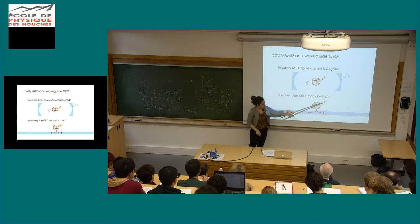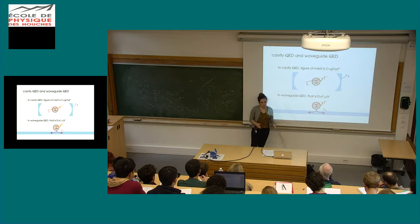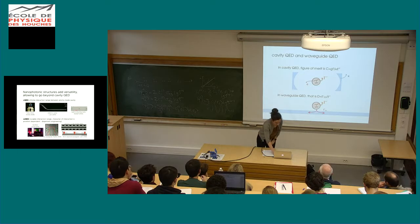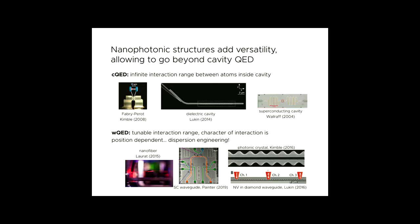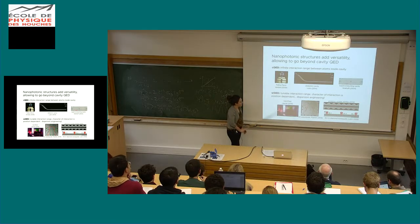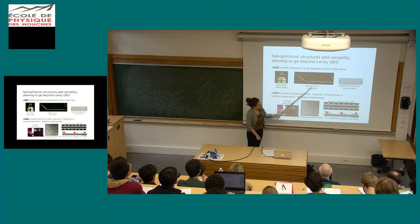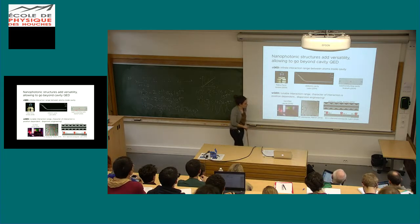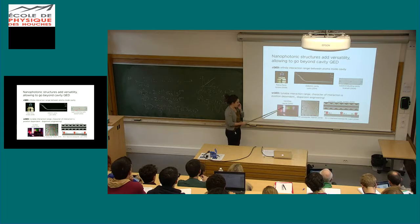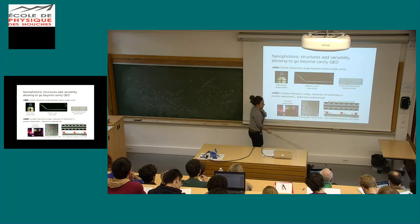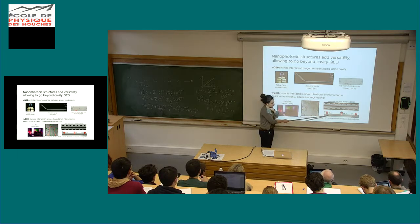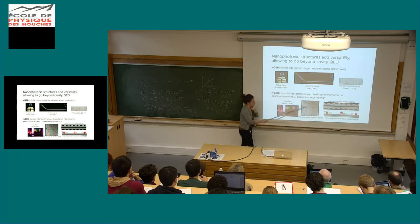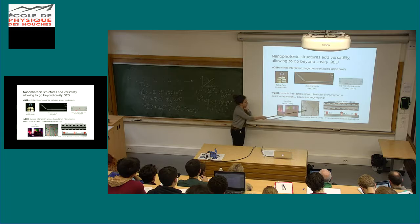The figure of merit for light-matter coupling in waveguide QED is γ₁D/γ′ — the ratio of the decay rate into the 1D channel to emission into free space. I'm calling it γ′ rather than γ₀ because the presence of the nanostructure modifies the vacuum modes. There are many kinds of structures: Fabry-Pérot cavities, photonic crystal cavities, and in waveguide QED — atoms near fibers, photonic crystals, solid-state emitters in diamond waveguides, and superconducting qubits.